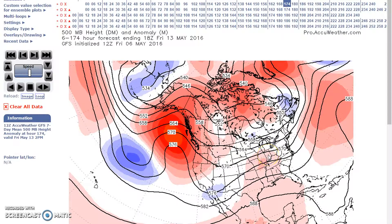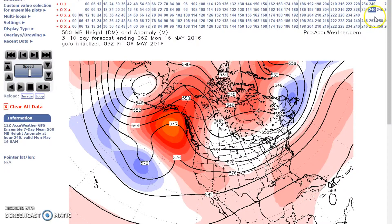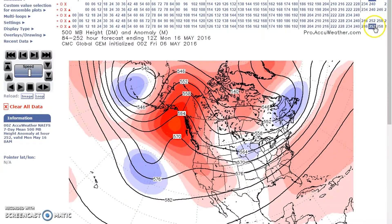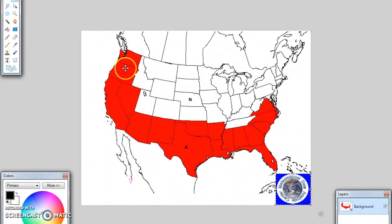We have a low to flat flow, and going to the 16th we have large positive height anomalies over Alaska and western Canada, with a trough here. The GFS is in good agreement with this. Going through all the models, you're going to see good agreement overall.